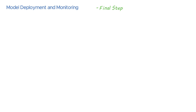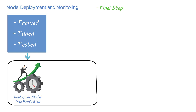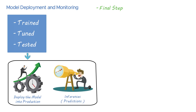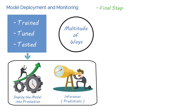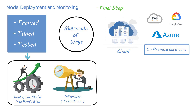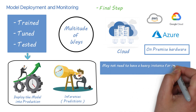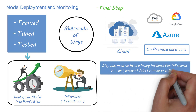This is the final step of the data science lifecycle. After a model is trained, tuned, and tested, you can deploy the model into production and make inferences against the model. There are a multitude of ways in which you could deploy your model into production — it could be done on the cloud like AWS, Google Cloud, or Microsoft Azure, or on on-prem hardware. Since the model is already trained, you may not need a heavy instance for inference on new or unseen data to make predictions.